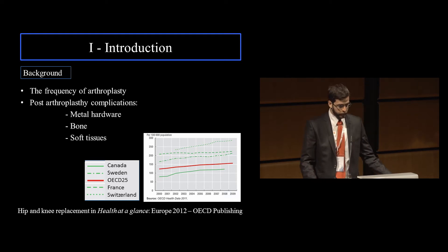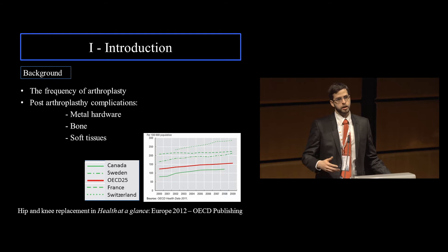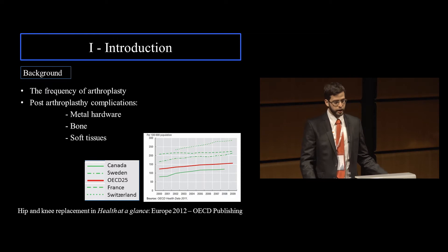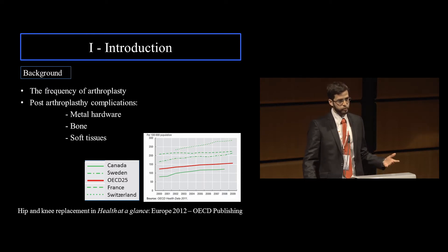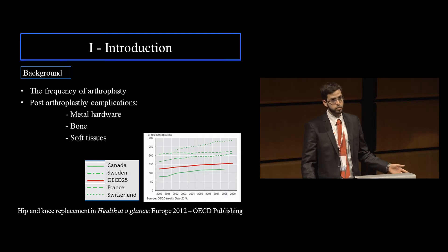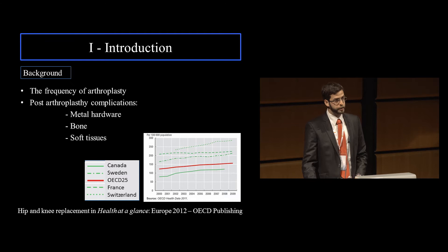When you think about arthroplasty, radiologists are more and more frequently called upon to evaluate these patients. In this setting, we have to think about three types of complications: metal hardware-related complications, bone-related complications, and finally soft tissue complications, which are a little less frequent than the other two but harder to evaluate.